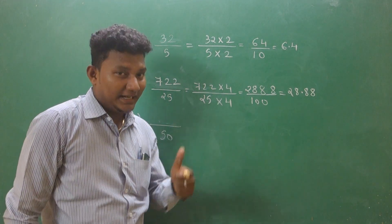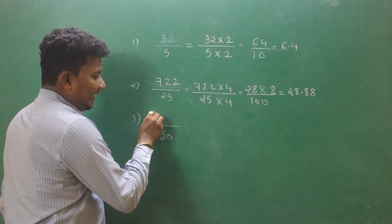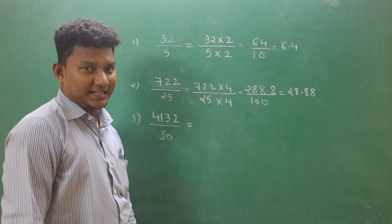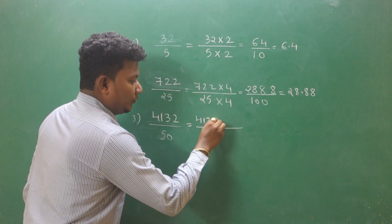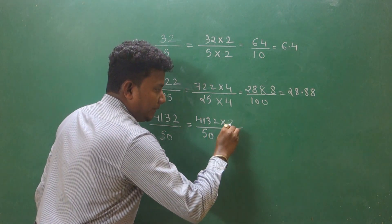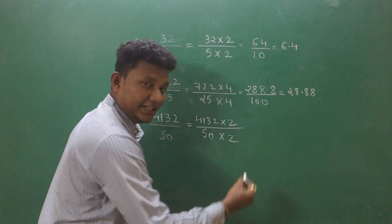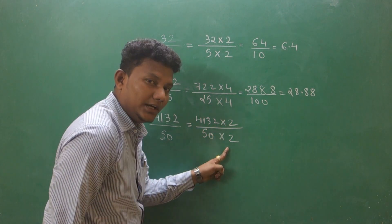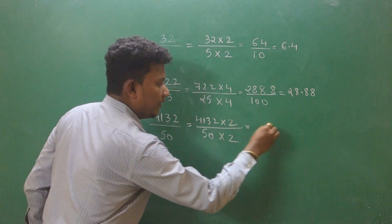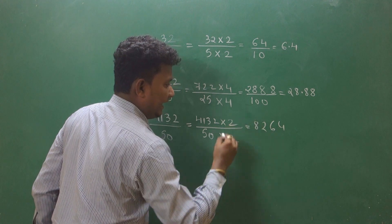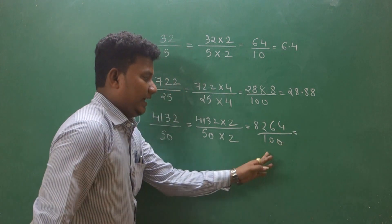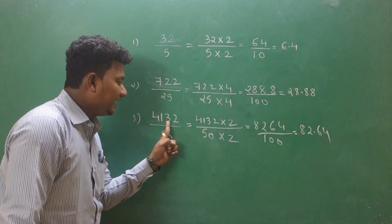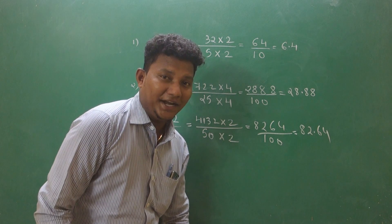Now let's see how to divide any number with 50. Let's take the example as 4132 divided by 50. Let's see how to find the answer in just a fraction of a second. Whenever you have to divide any number with 50, multiply 2 to the numerator and 2 to the denominator. So 4132 times 2 is 8264, and 50 times 2 is 100. Divided by 100, you will get the result 82.64. So 4132 divided by 50 equals 82.64.